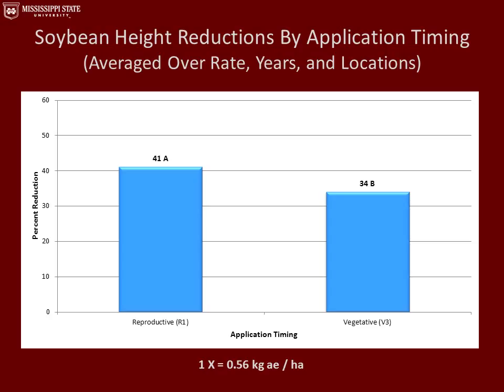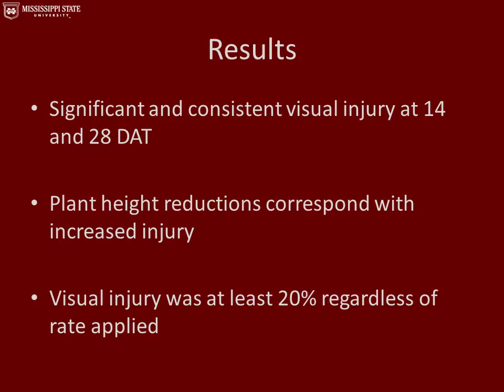This graph represents soybean height reductions by application timing, averaged over all rates, years, and locations. Treatments that received the application in the R1 growth stage had a 41% height reduction, and those that received it in the vegetative growth stage had a 34% height reduction. Overall, we had significant and consistent visual injury at 14 and 28 days after the treatments were made. Plant height reductions corresponded with increased injury, and visual injury was at least 20% regardless of the rate or timing of application.